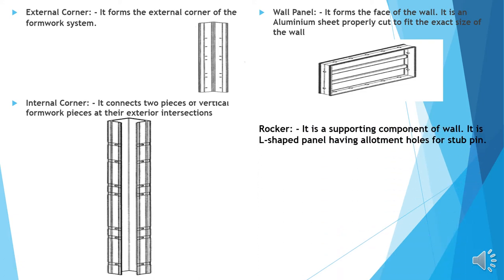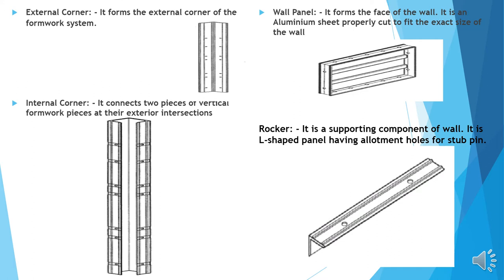Rocker: It is supporting component of a wall. It is L-shaped panel having allotment holes for a stub pin. Here you can see this is known as the rocker, through which you are supporting the wall panel.